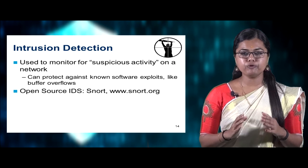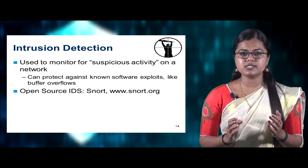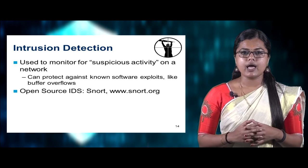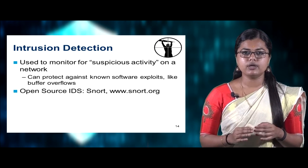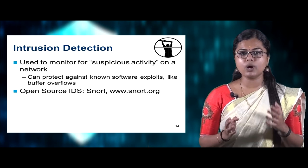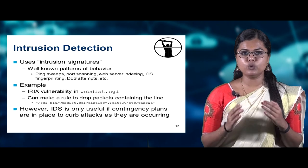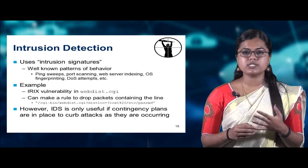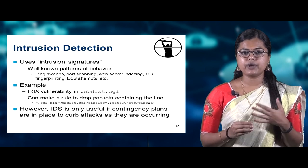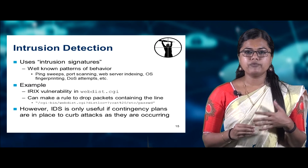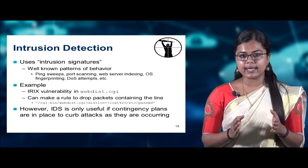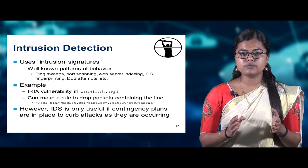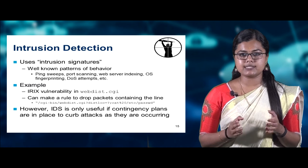Going for intrusion detection systems — an IDS is used to monitor for suspicious activity on a network and can protect against software exploits like buffer overflows. An example of an open source IDS is Snort; you can check www.snort.org for more information. An IDS uses intrusion signatures — well-known patterns of behavior like ping sweeps, port scanning, server indexing, OS fingerprinting — and can make rules to drop packets containing suspicious content. However, an IDS is only useful if contingency plans are in place to curb attacks as they occur.